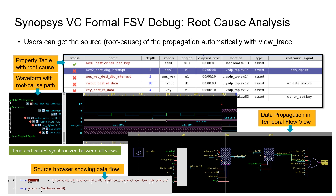The source and destination of data propagation can be easily identified with the purple colored X in the waveform. The value X denotes any value of the signal, which signifies that the source can influence the destination regardless of its value. Armed with all this information, the user can easily identify the cause and fix the security vulnerability.